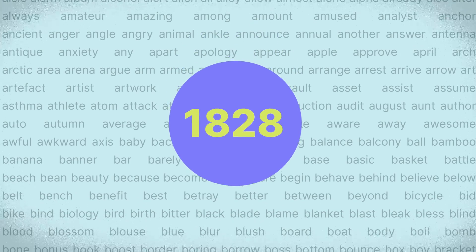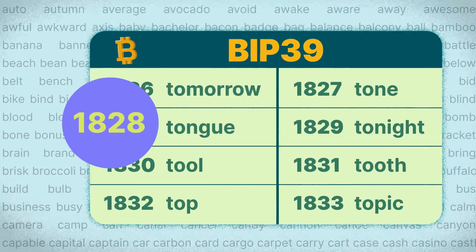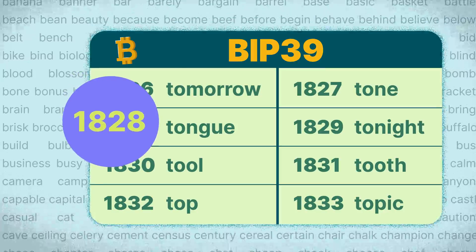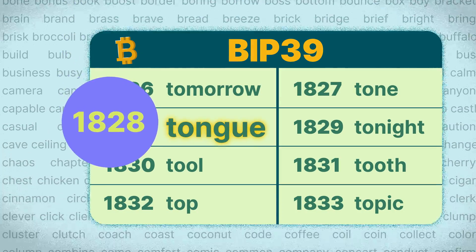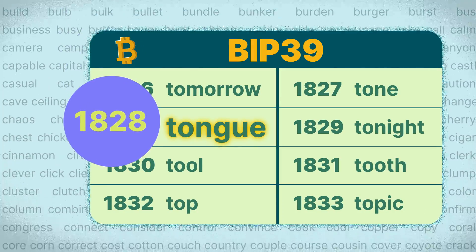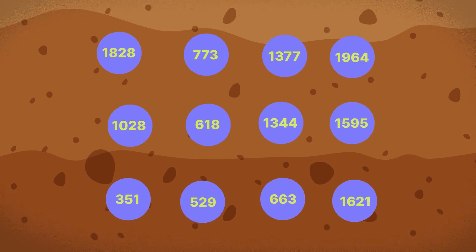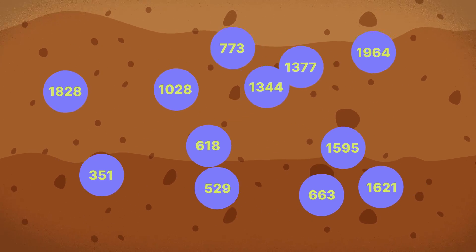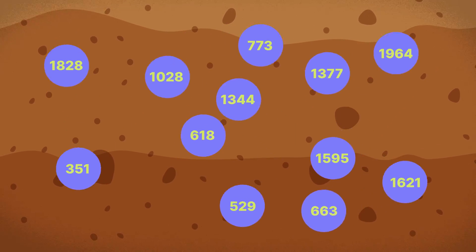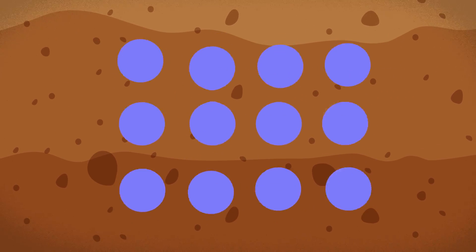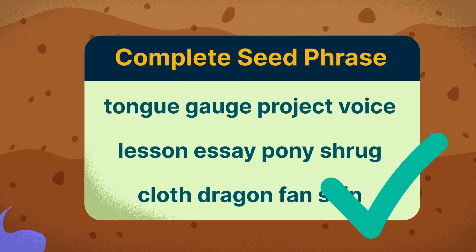So, for example, if the first group of bits converts into the number 1828, it will represent the word TONGUE. Repeat this with the rest of the groups and the final sequence of words from the BIP39 word list, and the complete seed phrase is formed.